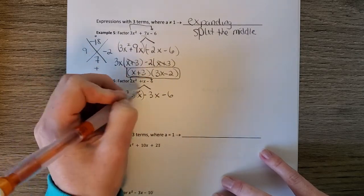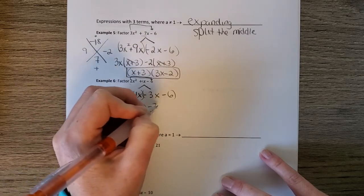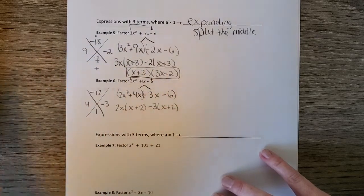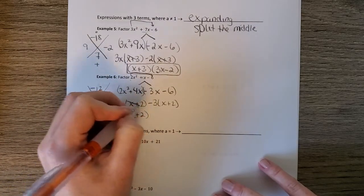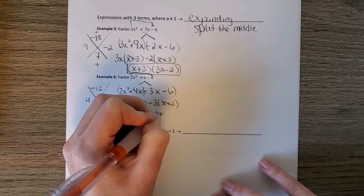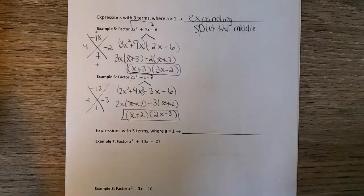And then we group. Factor out a 2x here. We get x plus 2. Factor out a negative 3, 3x plus 2. And then our GCF is x plus 2. And we're left with 2x minus 3 as the factor. So that's split the middle.